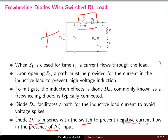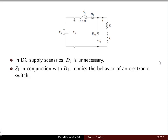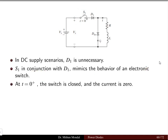If the input is AC, then for the negative half cycle there will be no current flowing; only in the positive half cycle will current flow. In DC supply scenarios, D1 is unnecessary — we don't require any diode when the supply is a DC source. The switch S1 in conjunction with diode D1 mimics the behavior of an electronic switch — such as a BJT, IGBT, or MOSFET.